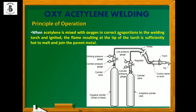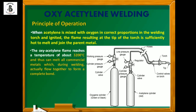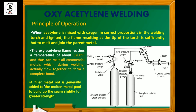When acetylene is mixed with oxygen in correct proportion in the welding torch and ignited — with the help of a lighter or matchbox — the flame resulting at the tip of the torch is sufficiently hot to melt and join the parent metals. The oxy-acetylene flame reaches a temperature of about 3,000 degrees centigrade, and thus it can melt all commercial metals, which during welding flow together to form a complete bond. A filler metal rod is generally added to the molten metal pool to build up the seam slightly for greater strength. The selection of filler metals requires an appropriate microstructure matching the base or parent metal.